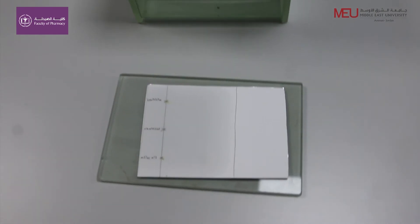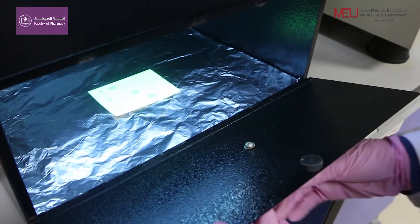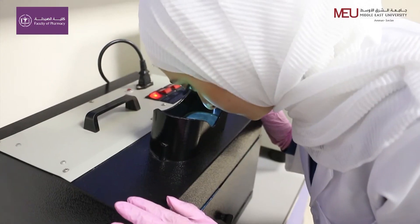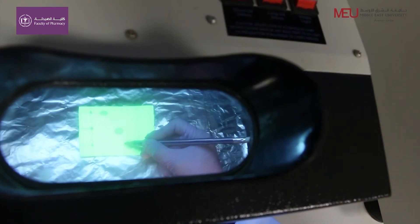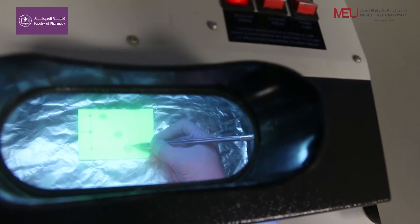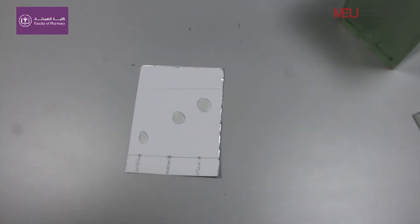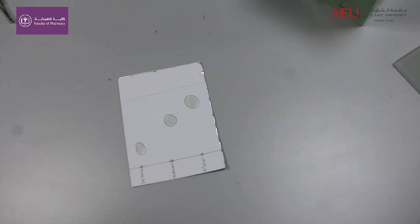Using a UV lamp, visualize the spots. Draw gently around each spot. You may now determine the RF values of your compounds.